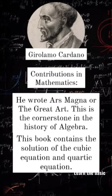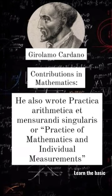In terms of contributions in mathematics, he wrote Ars Magna, or The Great Art. This is the cornerstone in the history of algebra, and the book contains the solution of the cubic equation and the quartic equation.